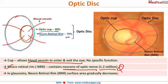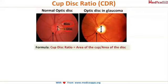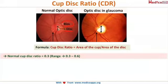Once the neurons get damaged in glaucoma, the neuro-retinal rim starts to gradually decrease in size and the cup-disc ratio increases. The normal cup-disc ratio is given by the formula: the area of the cup divided by the area of the disc.